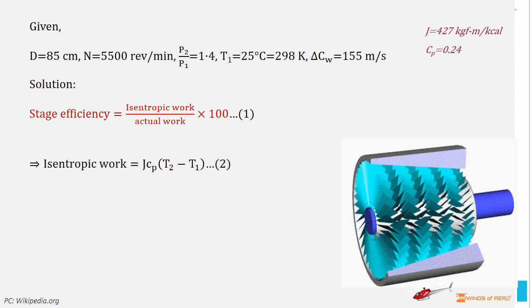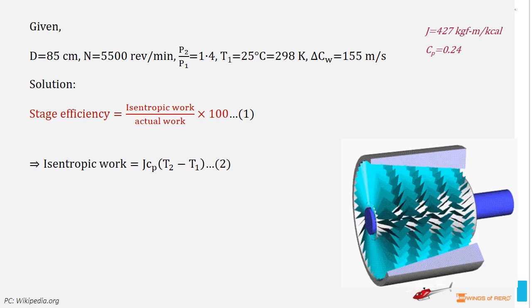Isentropic work is a function of actual temperature draw and the specific constant pressure. Then write, isentropic work is equal to J into C suffix P into T2 minus T1. Where, J is the mechanical equivalent of heat, which is 427 kilogram force meter per kilocalories. And C suffix P is the specific heat at constant pressure, which is 0.24. T1 is the air inlet temperature and T2 is the air outlet temperature, which is unknown.